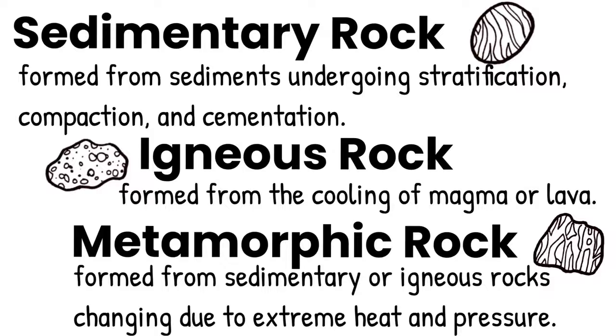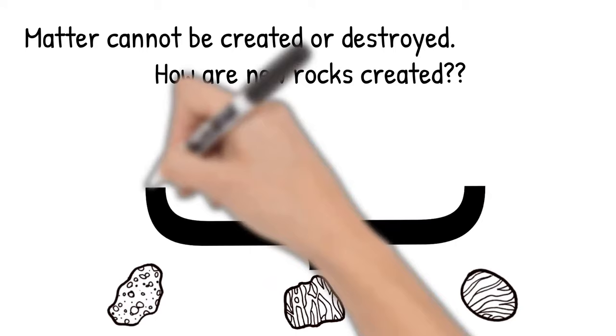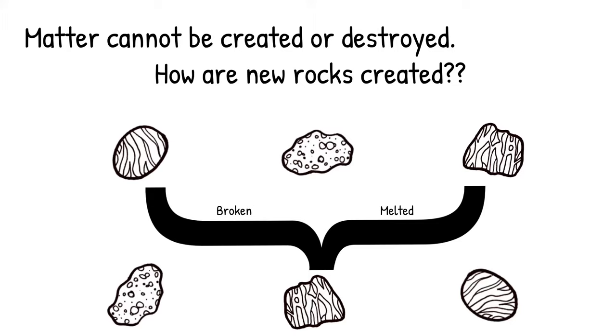One of the laws of science states matter cannot be created or destroyed. So how are new, younger rocks formed? They are formed from older rocks. Older rocks are broken apart or melted, and their materials then make new rocks. This process of making younger rocks from older rocks is cyclical and called the rock cycle.